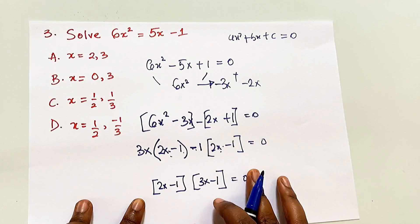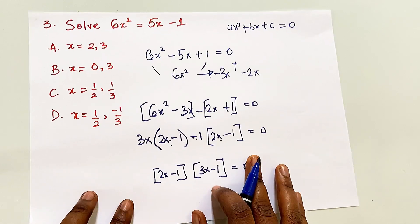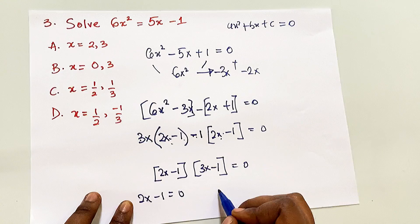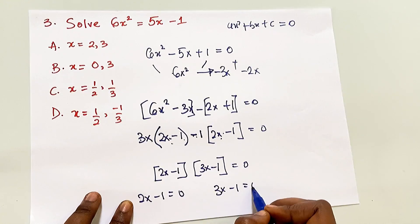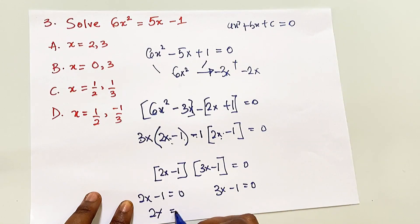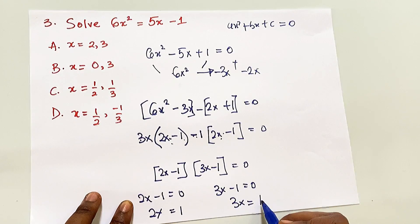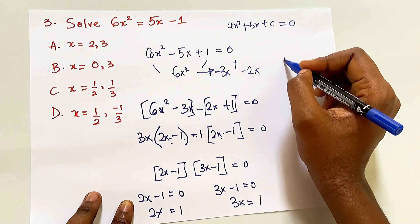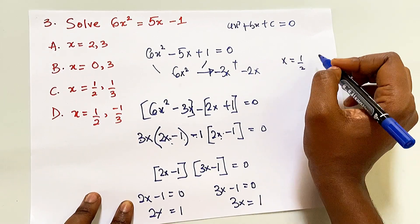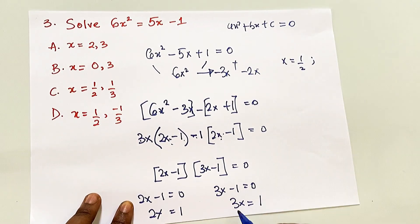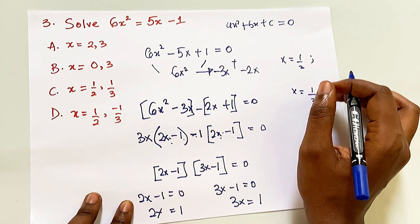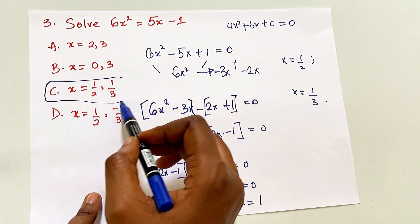Setting each factor to zero: 2x - 1 = 0 gives 2x = 1, so x = 1/2. And 3x - 1 = 0 gives 3x = 1, so x = 1/3. Therefore x = 1/2 or x = 1/3. Our answer is C.